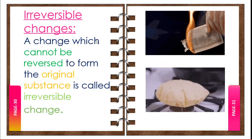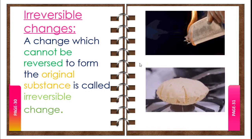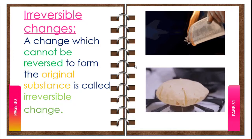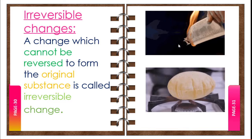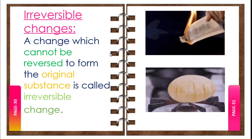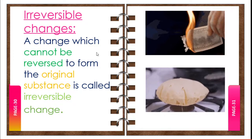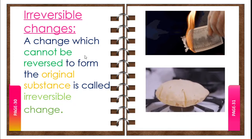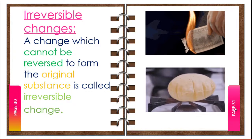A change which cannot be reversed to form the original substance is called an irreversible change. For example, if we burn a piece of paper it changes into ash and smoke — we cannot combine the ash and smoke to form the original piece of paper. So burning of paper is an irreversible change. Some more examples of irreversible changes: formation of curd from milk, cooking of food, rusting of iron, grinding of wheat grains into flour, baking of chapati, growth of a plant, and formation of a flower from a bud.